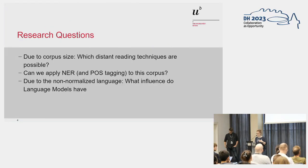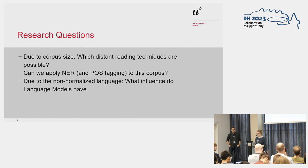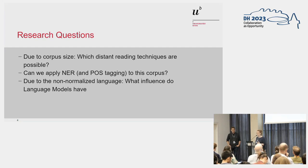When we digitized parts of this corpus, we came up with some research questions. Due to the size of the corpus, we were of course interested in which distant reading techniques we can apply. Can we apply named entity recognition, for example, and POS tagging? POS is in brackets because we did not until now succeed in doing something which is reasonable. We also have problems with the non-normalized language, and we wanted to test which influence the language models have.